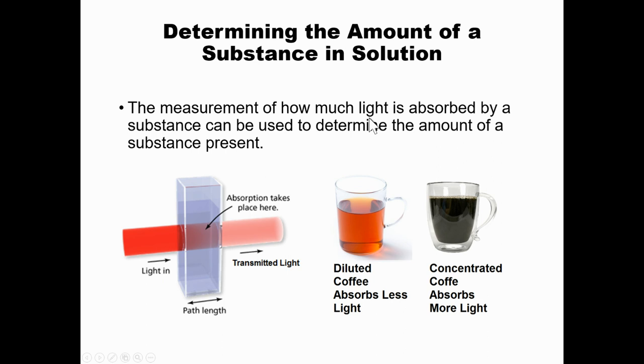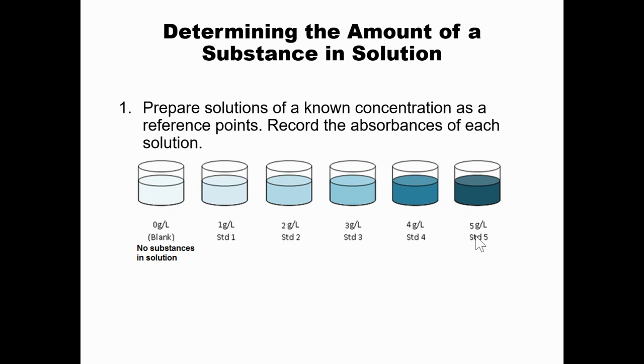So determining the amount of a substance in solution. So the measurement of how much light is absorbed by a substance can be used to determine the amount of substance present. So we talked about this earlier. You shine light through the substance. There's some absorption that takes place within the solution. And then whatever's not absorbed is transmitted out. And the example I provided previously, I apologize for the misspelling. It's a picture, so I can't fix it very easily. And diluted coffee would absorb a lot less light than dark coffee. Dark concentrated coffee would absorb more light. So we would expect a higher number for the concentrated coffee.